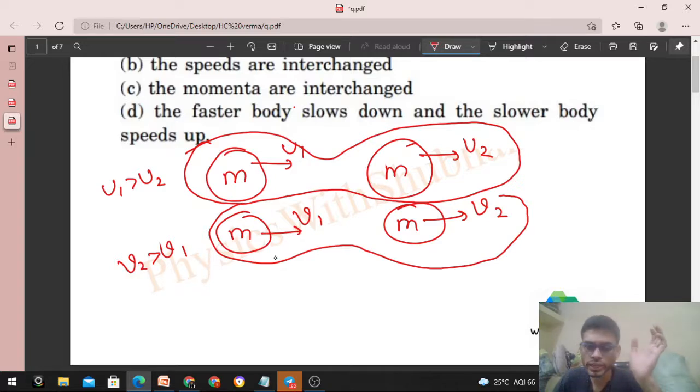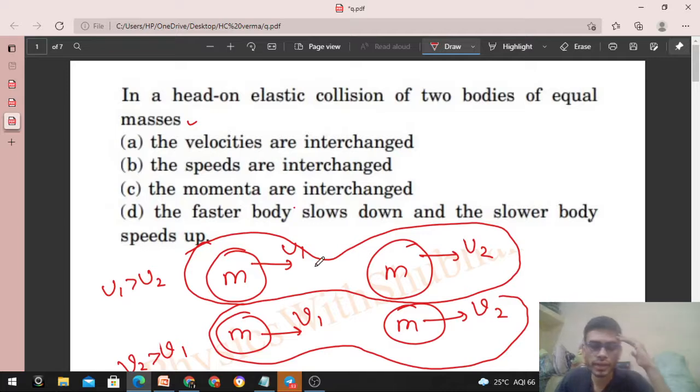Means the body ahead, its velocity will become higher. Then it will move ahead, while the body behind will have lower speed as compared to the speed of the body ahead, right?